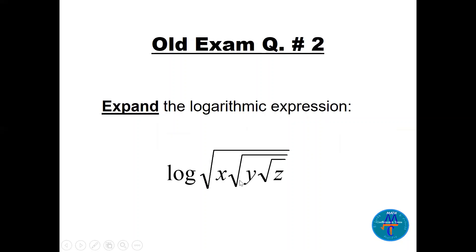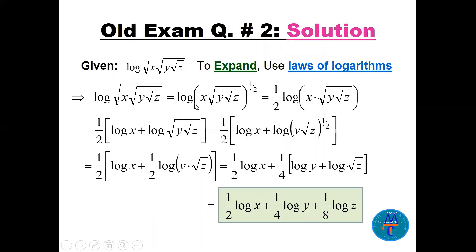Question number two: expand the expression log of the square root of (x · √y · √z) using laws of logarithms. The outer square root makes this (x · √y · √z) to the power 1/2, so we bring the 1/2 outside as half·log of the product. Then, using the product law, this becomes half·log x plus half·log(√y · √z).